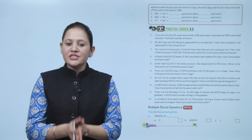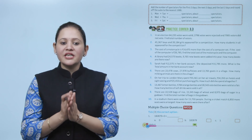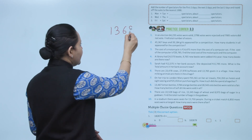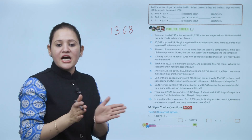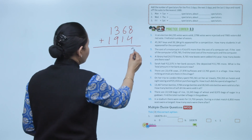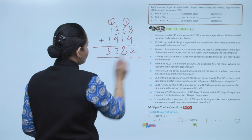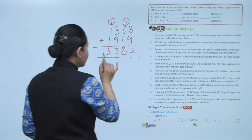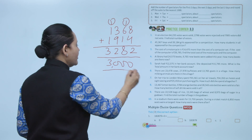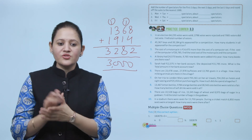Add the number of spectators for the first two days, next two days, and last two days, then round the sums to the nearest 1000. For Monday plus Tuesday: 1,358 plus 1,914. Adding them gives 3,282, which rounds to 3,000. Like this, you have to find the number of spectators for the next two days and so on.